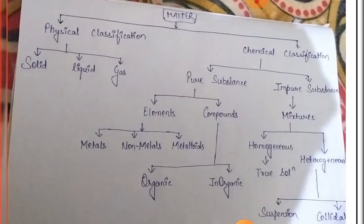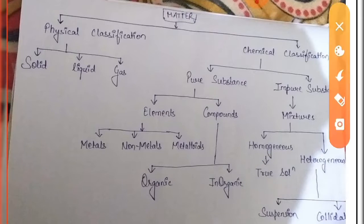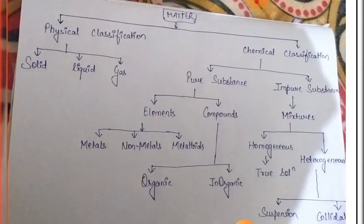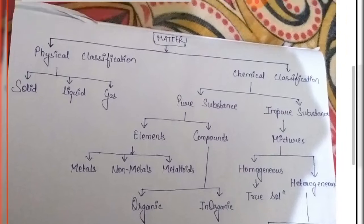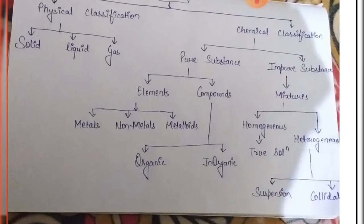Homogeneous mixture consists of true solutions, and heterogeneous mixture consists of suspension solution and colloidal solution. True solutions are a type of homogeneous mixture which have a definite proportion in combination — like a salt solution such as sodium chloride. Suspension solution and colloidal solution are not combined in equal proportion. An example of suspension solution is chalk water, and an example of colloidal solution is soap solution.